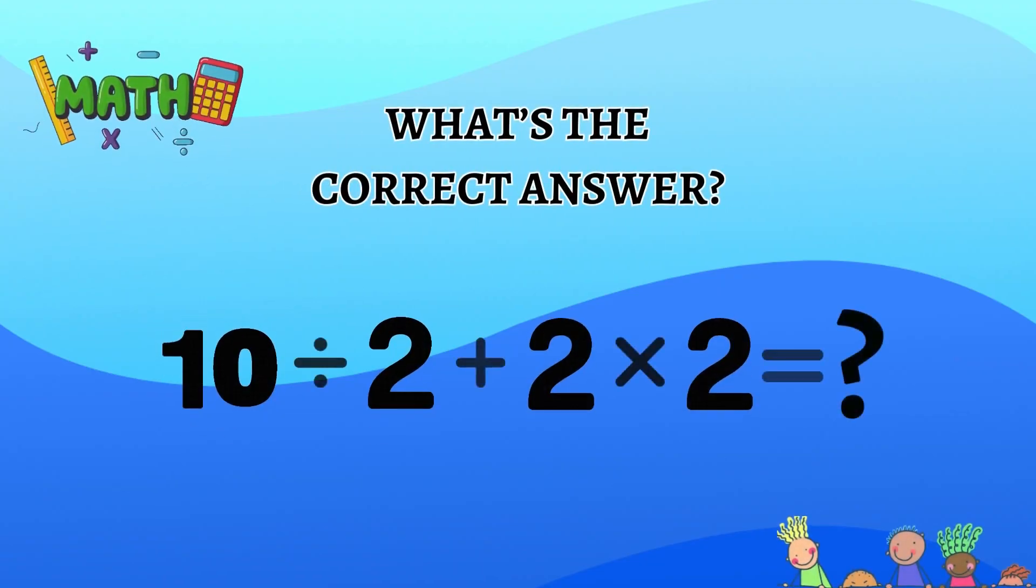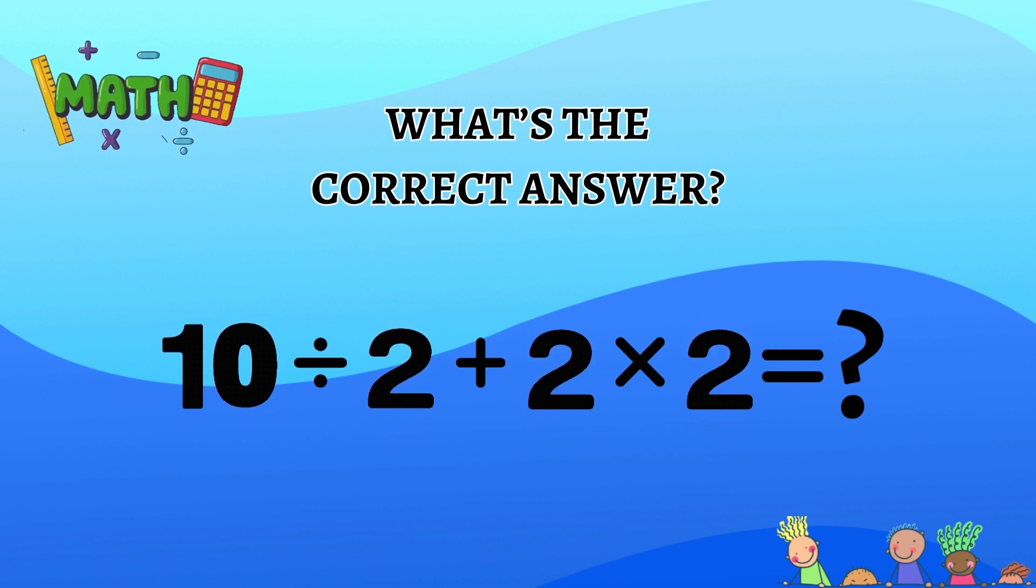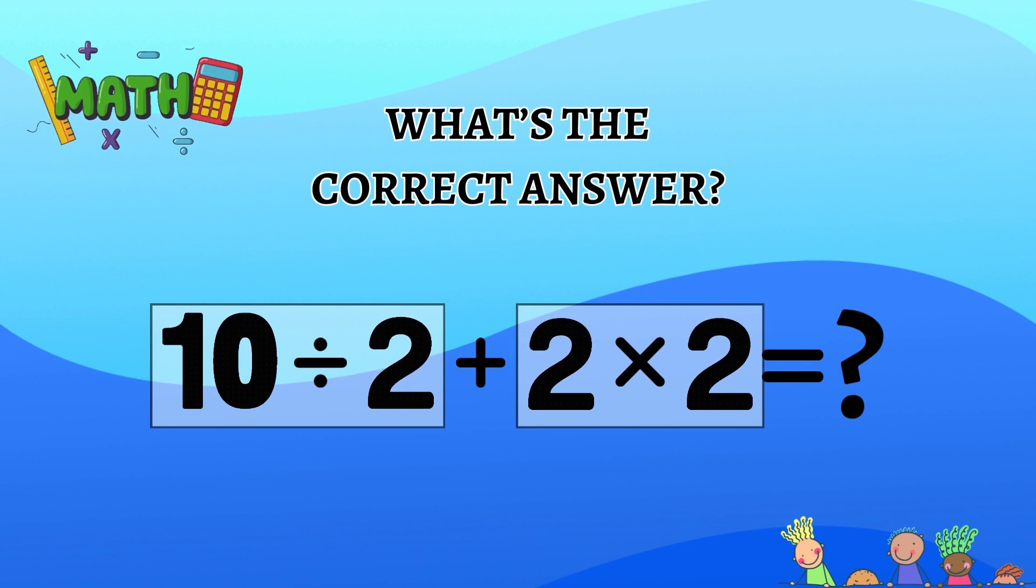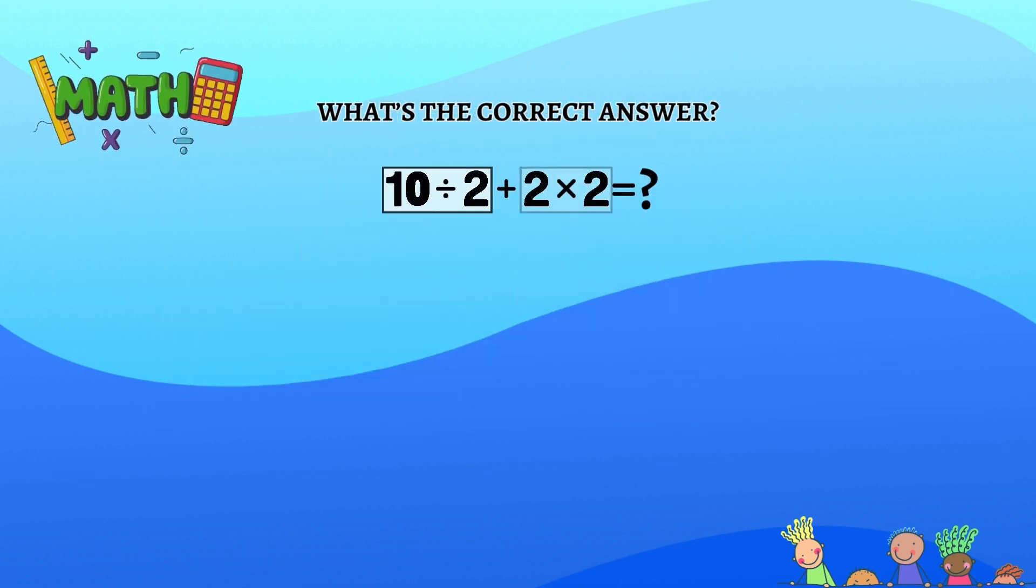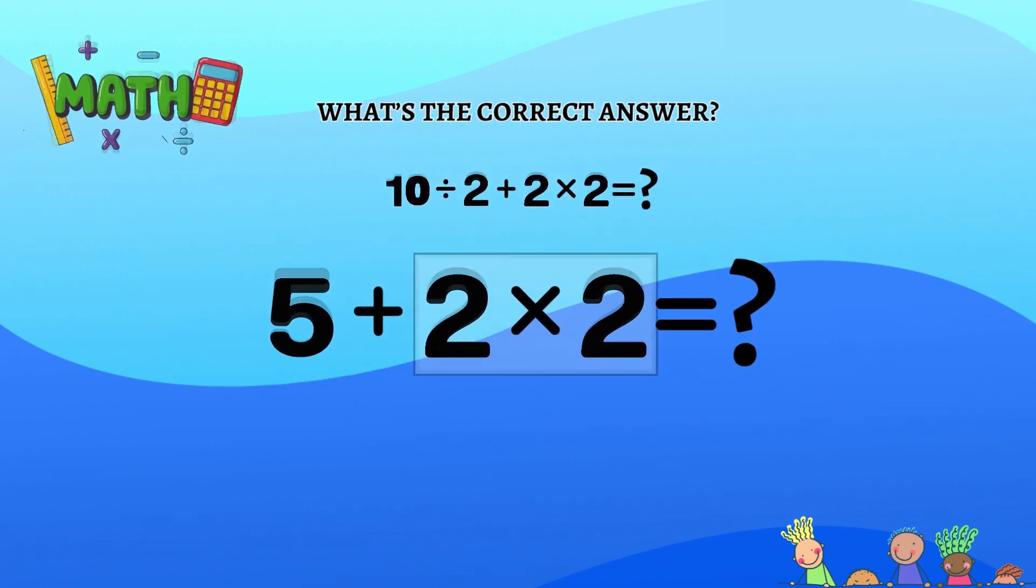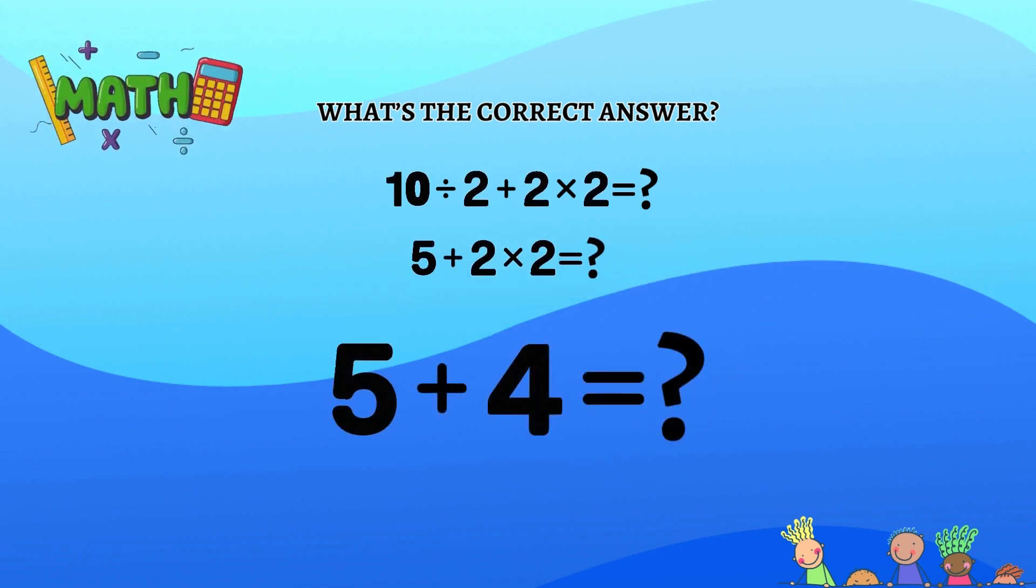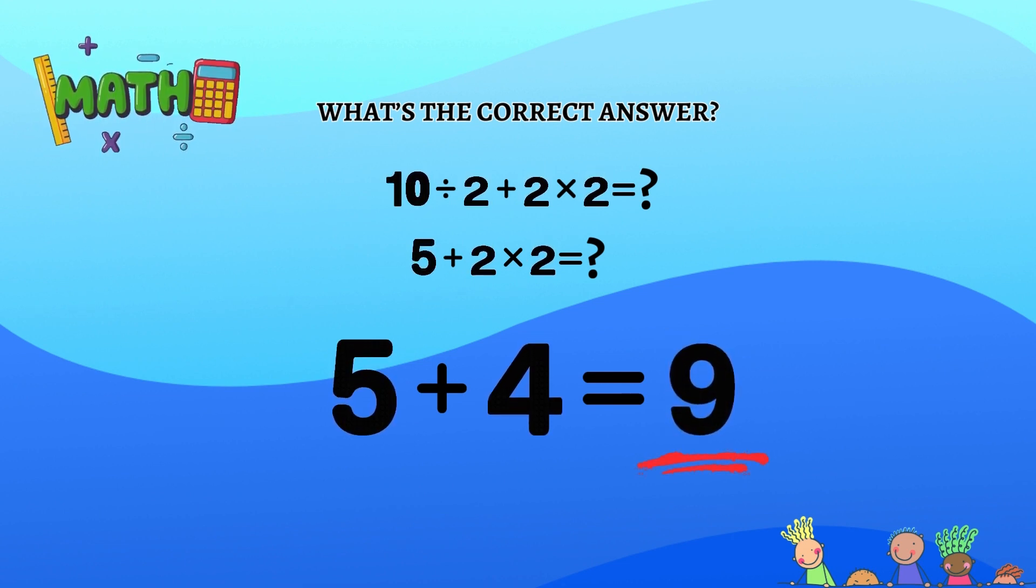All right, now that we've got that covered, we can actually solve the equation. We have both division and multiplication in this problem, both of which take priority over addition. Working from left to right, we're going to solve 10 divided by 2 first. That's 5. Then we move on to the multiplication. 2 times 2 is 4. We now have 5 plus 4, and that's 9. The correct answer to this equation is 9. Mind you, this is an uber easy equation. Stay with us though, because we'll soon hit you with a much trickier one.